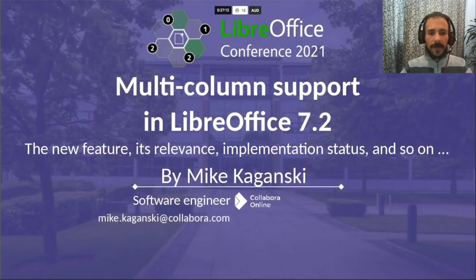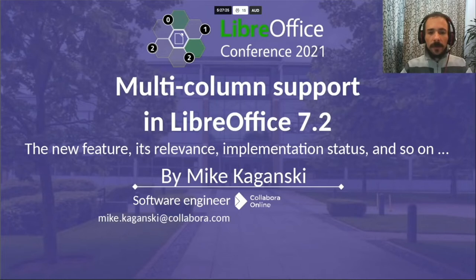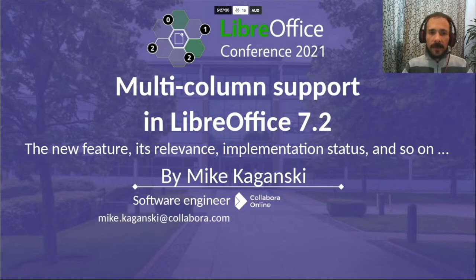Hello everyone, I am Mike Ogansky, software engineer working for Collabora Productivity, mostly working on its core part. This talk is about the feature that is new in LibreOffice 7.2: multi-column support in text boxes, shapes and other graphical objects.